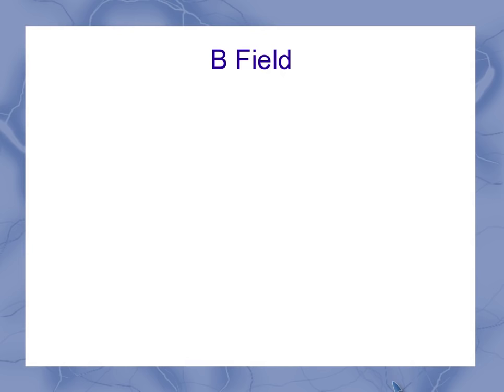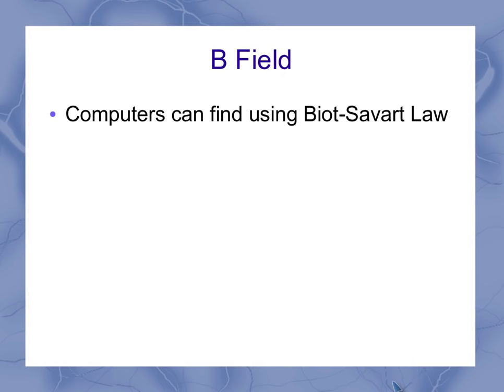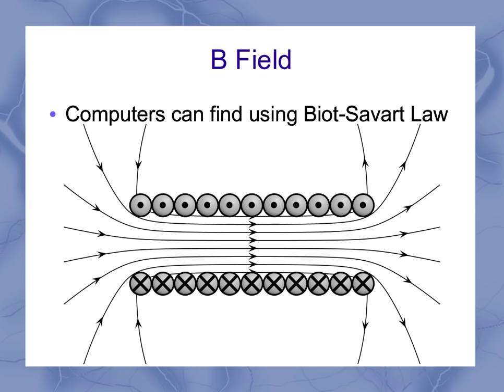So now we get to look at the B field for this. Well, if I was going to use the Biot-Savart law, it'd be really complicated to solve by hand, but computers can do it pretty easily. Here's a simulation of what it looks like if I actually calculate the magnetic field around one of these solenoids.